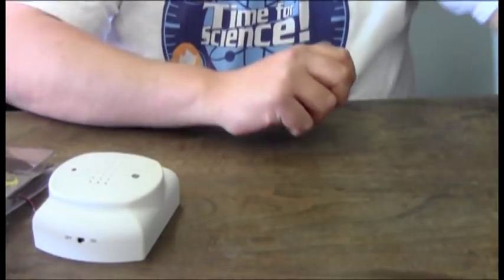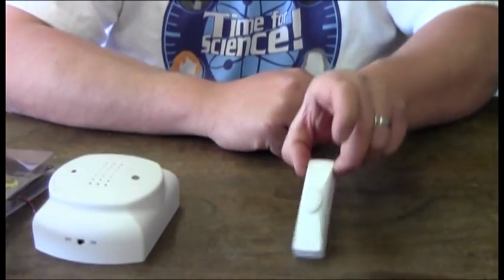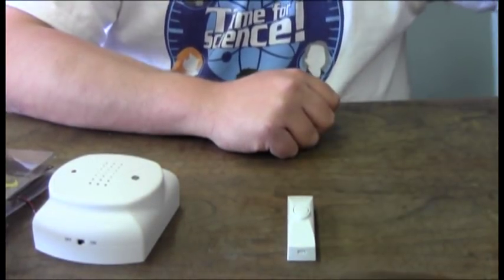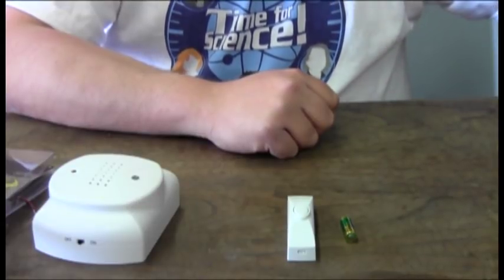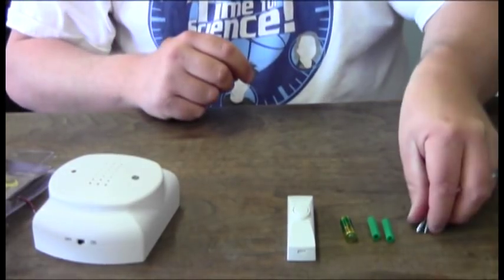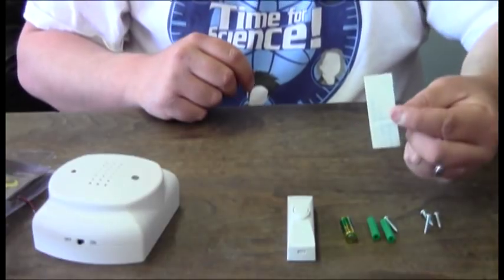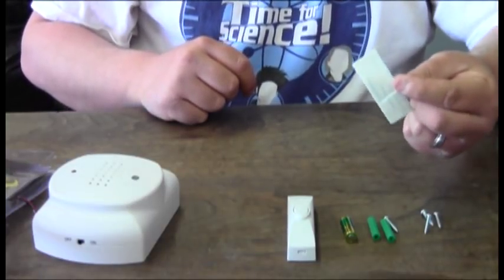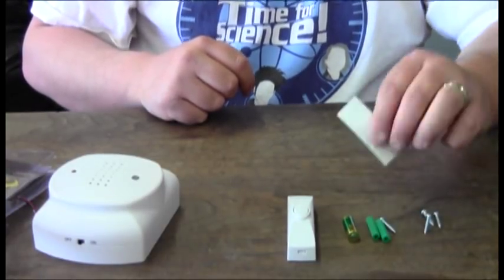The packaging also comes with the wireless bell, a small battery, two wall anchors, four screws, and an adhesive strip. The adhesive strip we're not going to use in this demonstration.